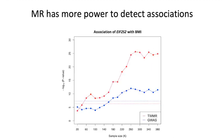This assumption holds when we look at results from UK Biobank. We extracted several datasets of increasing sample sizes of British unrelated individuals, and for each dataset we performed GWAS and then TWMR for BMI. For this example gene associated with BMI, we need only 60,000 individuals to detect a significant association with TWMR, but we need at least 180,000 individuals to detect a significant association using GWAS alone.